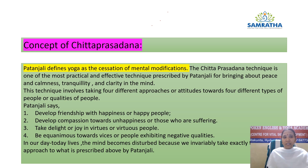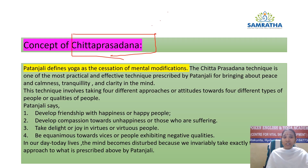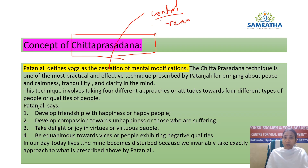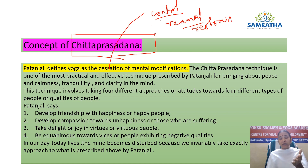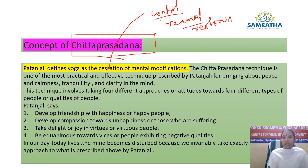Now we see the concept of Chitta Prasadhana. Patanjali defines yoga as the cessation of mental modifications — the control or restraint of mental modifications. We have seen how we control our mind from taking various forms; there are five Chitta Vrittis. Is it that only the cessation of mental modifications is known as yoga, according to the great sage Patanjali Maharshi?